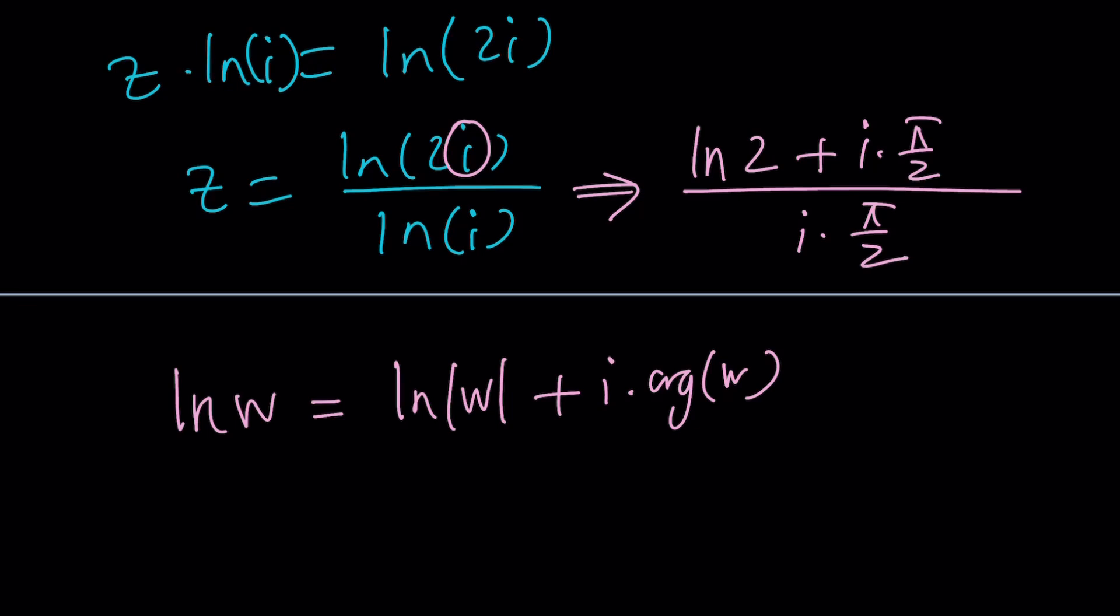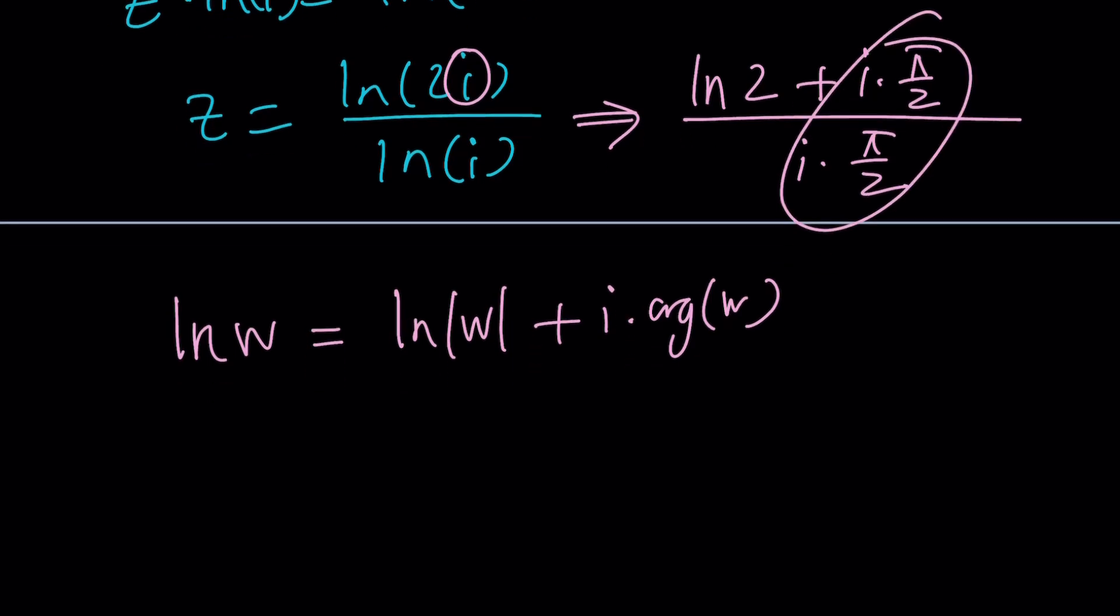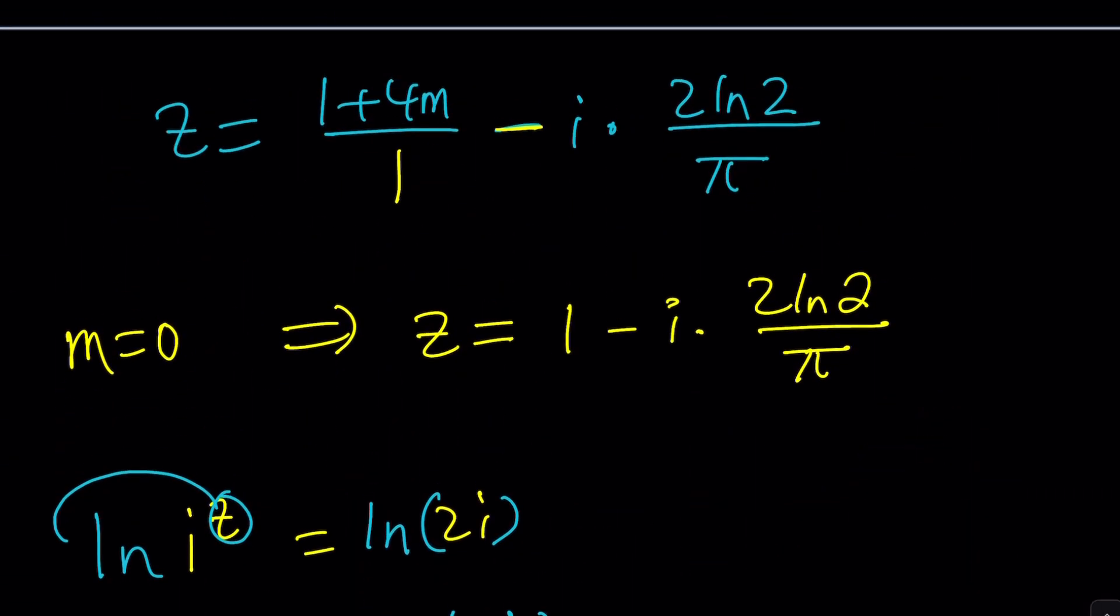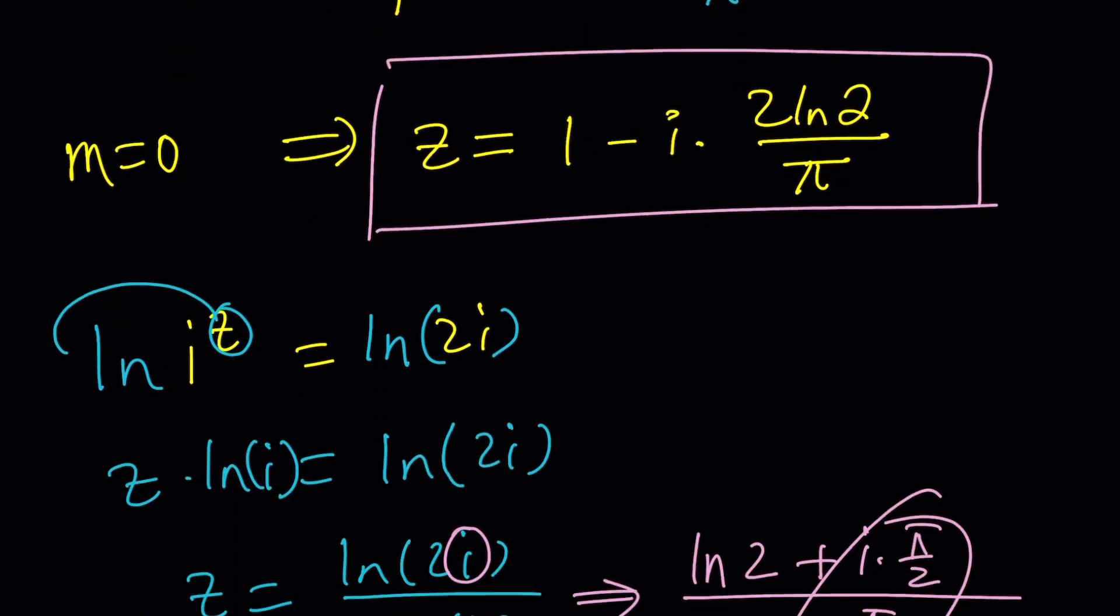If you go ahead and split it up from here, you're going to get one. And then from the other one, you're going to get 2 ln 2 divided by pi. And of course, don't forget to multiply by i. So that means we're going to get the exact same solution, but again, the simplified version because we assumed m and n are both zero.